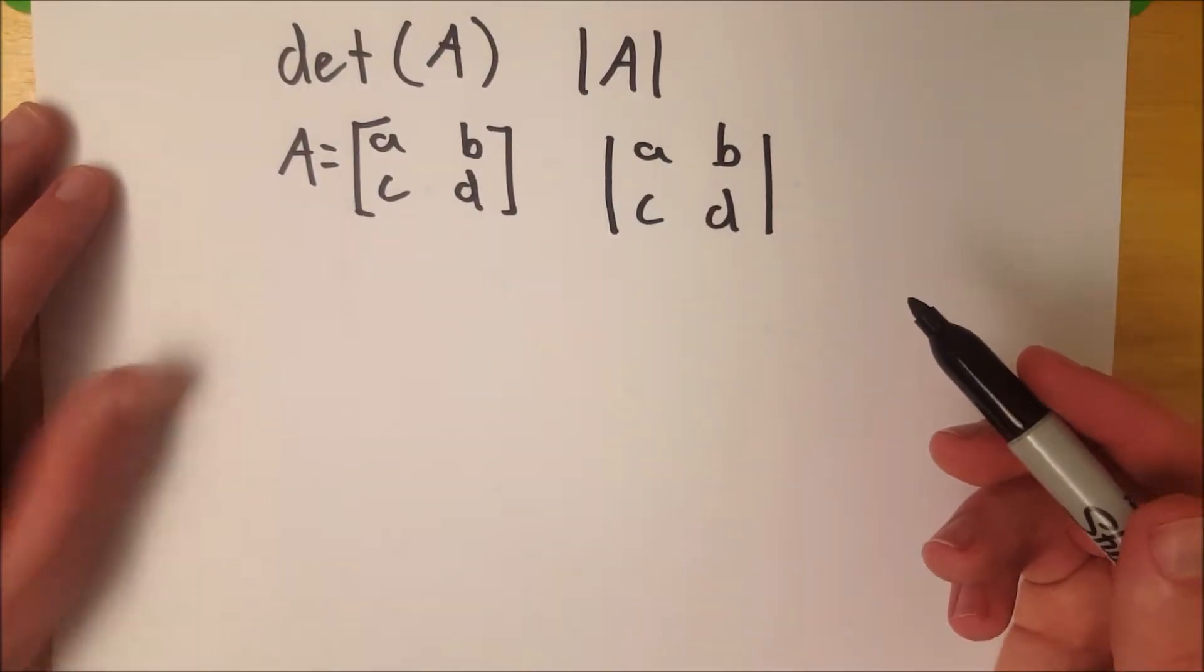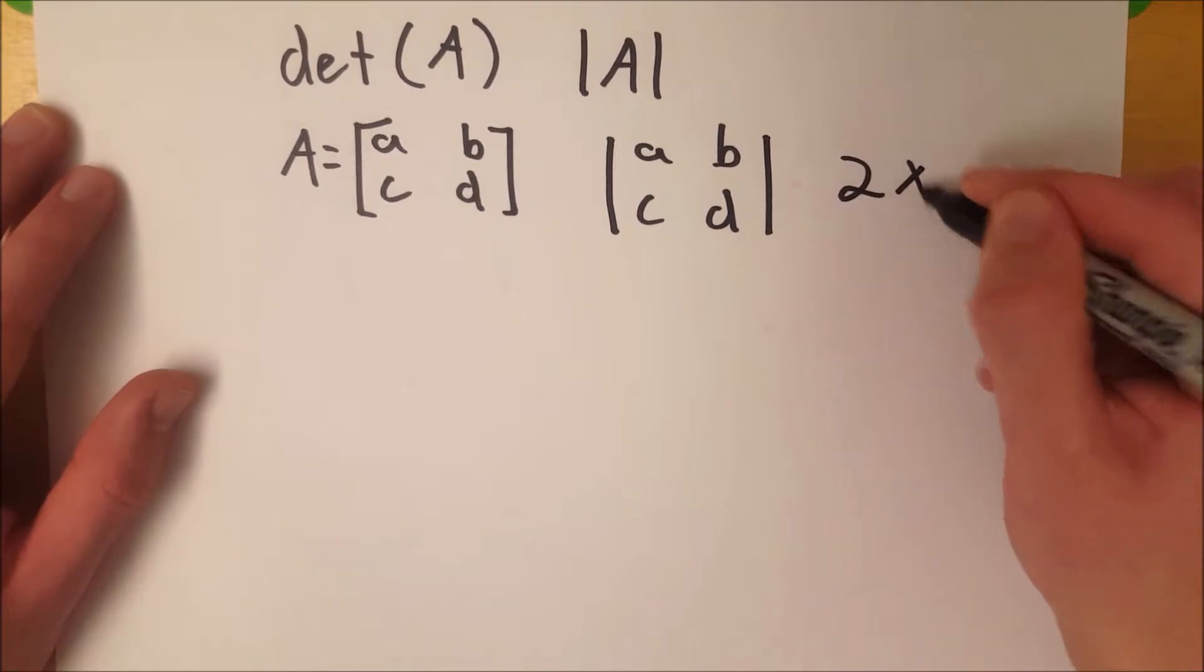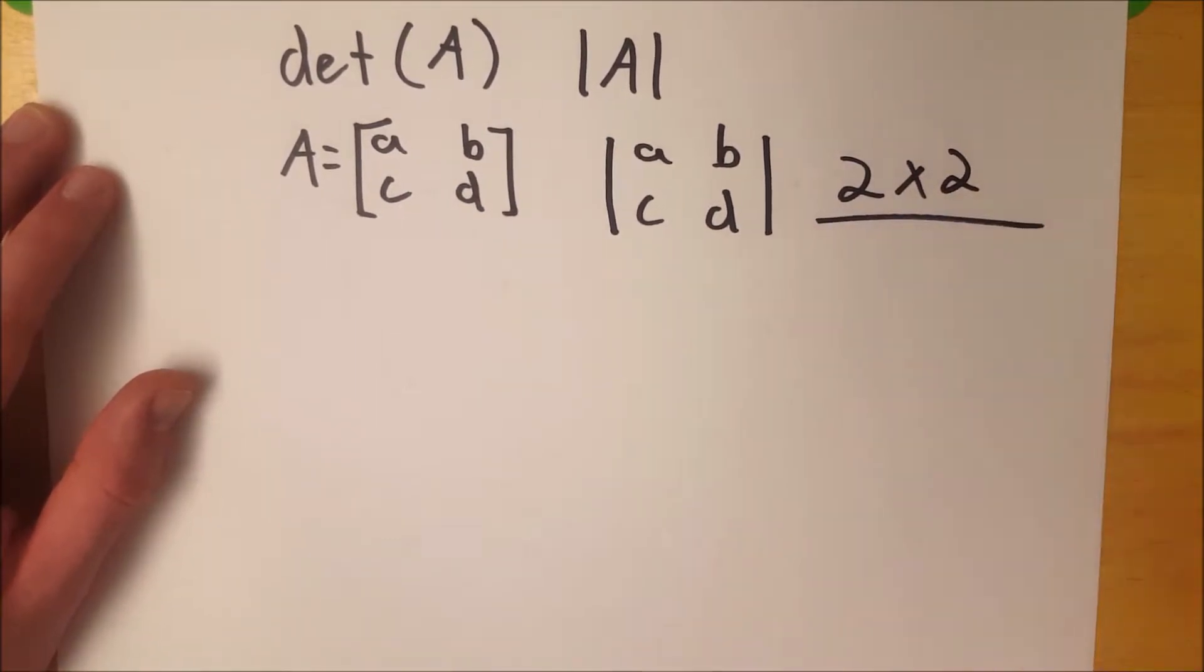So how do you find the determinant of a 2x2 matrix? And again, 2x2 important. This only works for 2x2 matrices. It's a fundamental part of finding the determinant of larger matrices, so you want to be comfortable and familiar with it, but this only works for 2x2 matrices.